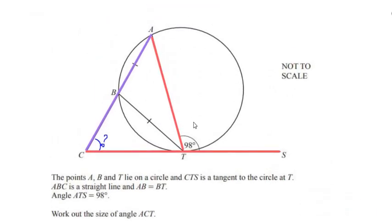Applying this here: AT is a chord and CTS is a tangent, and the angle made by the chord with the tangent is 98 degrees. Hence, by the Alternate Segment Theorem, angle ABT — which is the alternate angle — is also equal to 98 degrees. So we have found angle ABT.